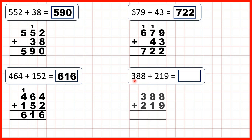Finally, we get to 388 plus 219. 8 plus 9 is 17, so that's 1, 7. 1 plus 8 plus 1 is 10, so that's 1, 0. And 1 plus 3 plus 2 is 6, so our answer is 607.